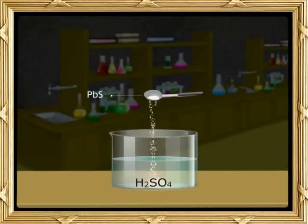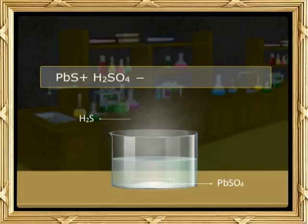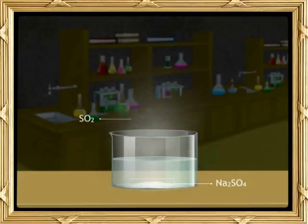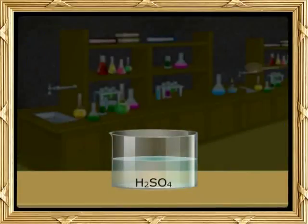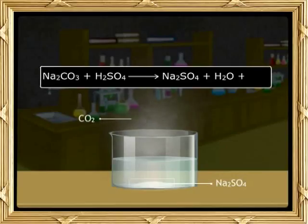Sulfuric acid forms Hydrogen Sulphide with Sulphides. PbS + H2SO4 → PbSO4 + H2S. Sulfuric acid forms Sulphur Dioxide or Sulfurous Acid from Sulphites in cold conditions. Na2SO3 + H2SO4 → Na2SO4 + H2O + SO2. Sulfuric acid liberates Carbon Dioxide from Carbonates. Na2CO3 + H2SO4 → Na2SO4 + H2O + CO2.